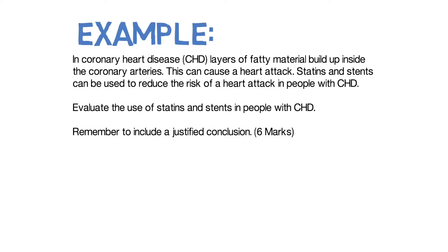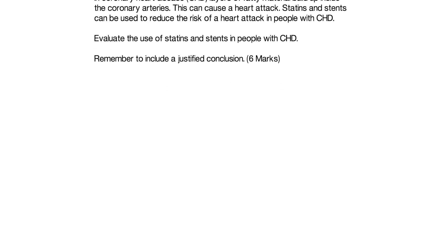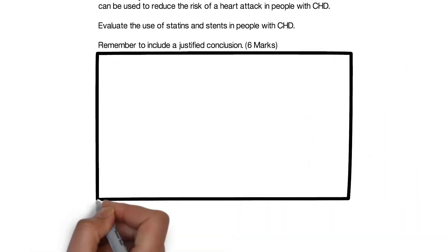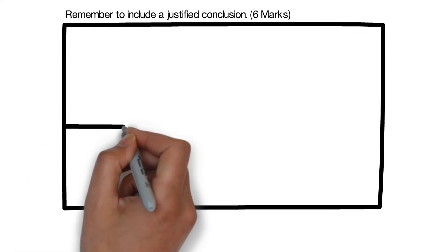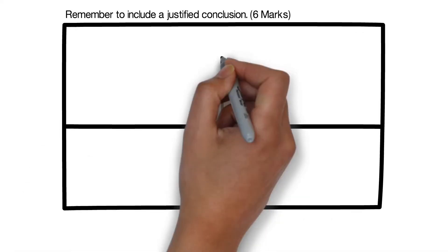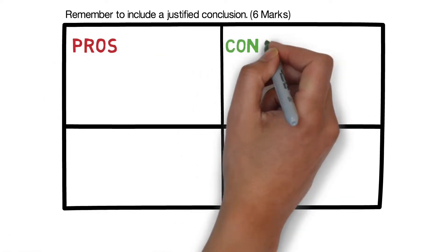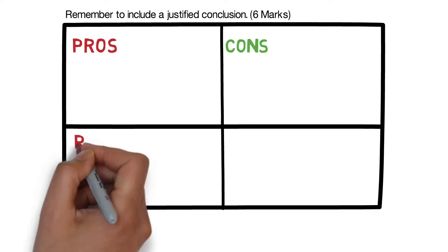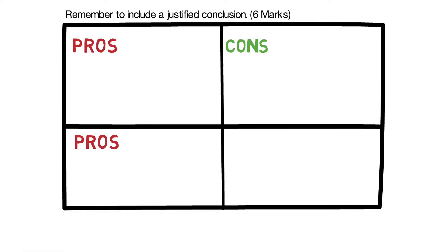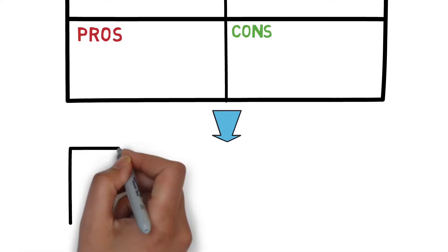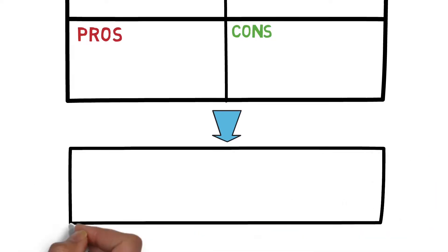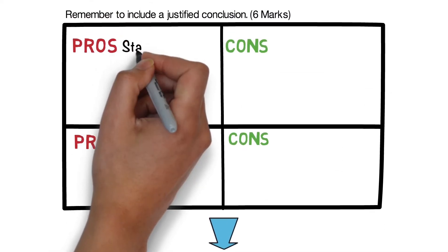Now when thinking about answering a question like this, a good idea is to produce a thinking map where we know for an evaluate question we need to look at the pros and we need to look at the cons in this case of statins and stents. So for the marks we need to do the pros and cons of each followed by a justified conclusion, and that conclusion can be anything providing it refers to the pros and cons that I gave for both of those.